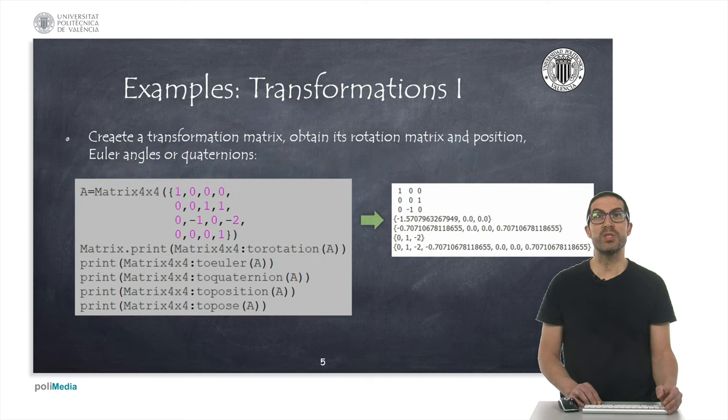To create a homogeneous transformation matrix, we can use the class Matrix4x4, in which we can specify the 16 elements of the transformation matrix from a LUA table. Once created, we can access its rotation matrix, as shown. The Euler angles that this rotation matrix represents, or its equivalent representation in quaternions, in both cases, they return a LUA table with the requested values.